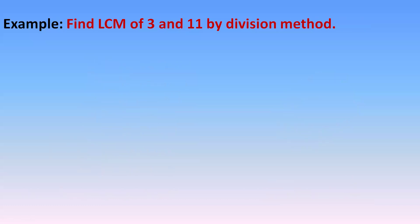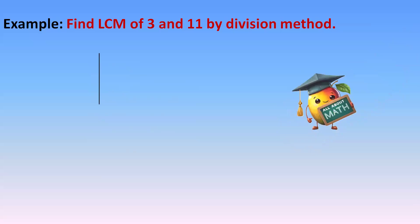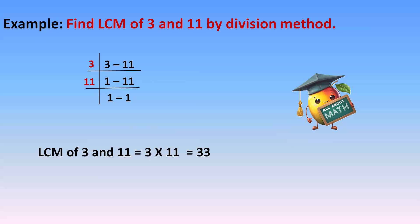Find the LCM of 3 and 11 by the division method. Both 3 and 11 are prime numbers. Draw the vertical and horizontal lines, write 3 and 11. They won't come in the 2 table. In the 3 table, 3÷3=1 but 11 is not in the 3 table, so 11 stays. Then 11 is prime, so 11÷11=1. LCM = 3 × 11 = 33. Trick: when finding LCM of prime numbers, you can directly multiply them to get the answer.